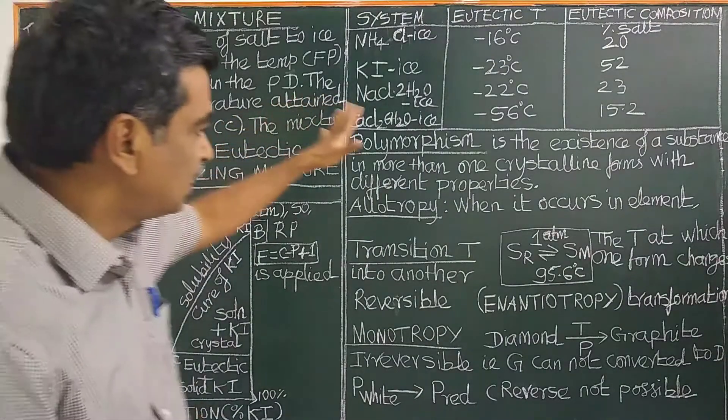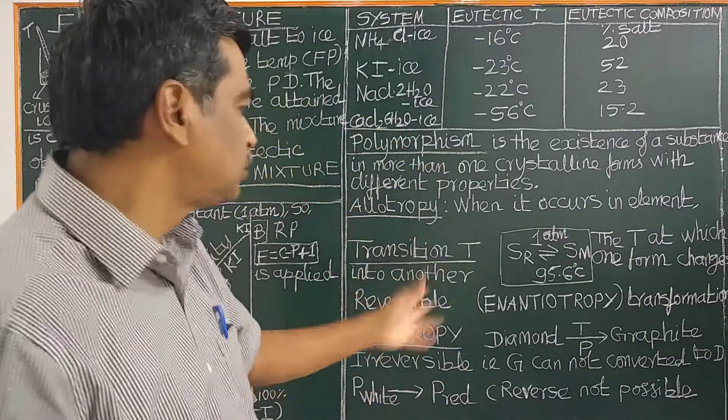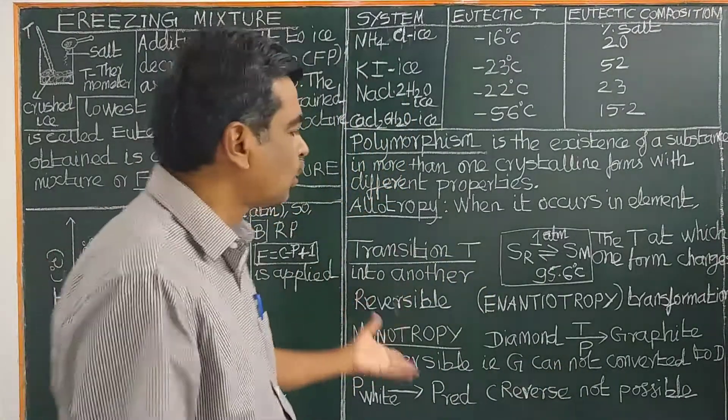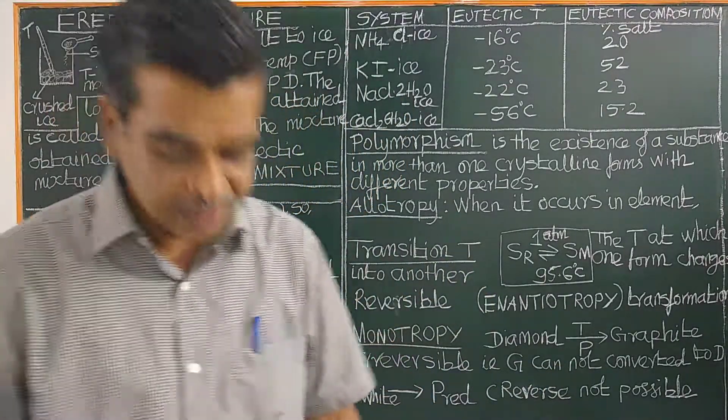We should understand the phase diagram and the corresponding temperature and properties. The transition temperature is related to enantiotropy and monotropy. Thank you for watching.